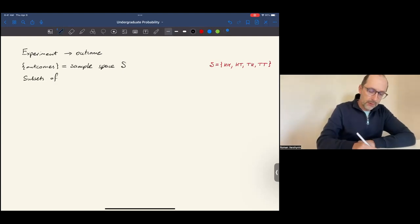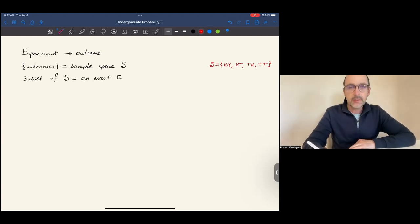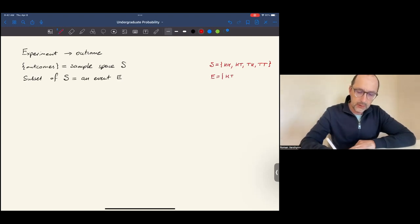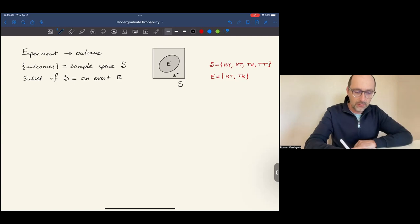Subsets of the sample space are called events. For instance, an event could be getting the head exactly once, in which case it is this subset. We can visualize by looking at S as the square, the universe of all possible outcomes. And there are also subsets, such as this one, E.